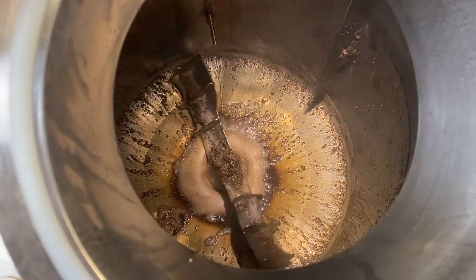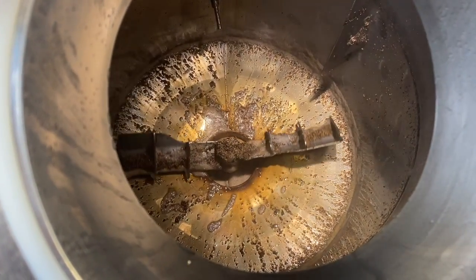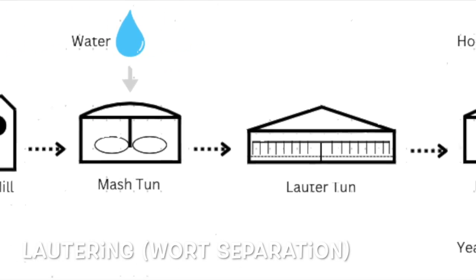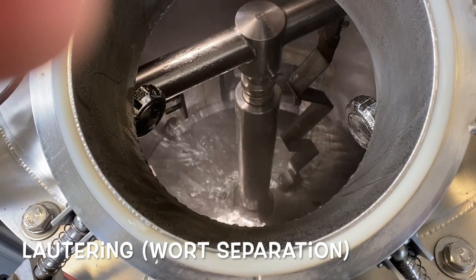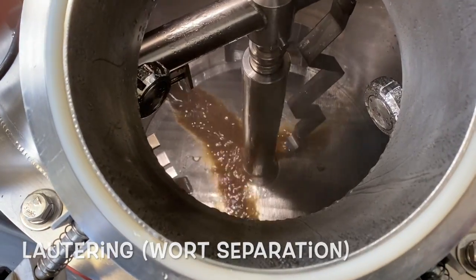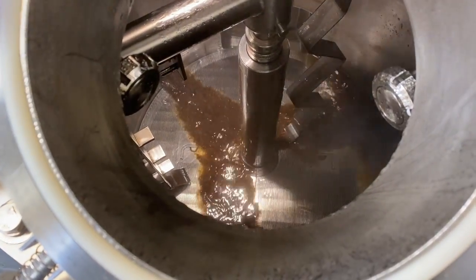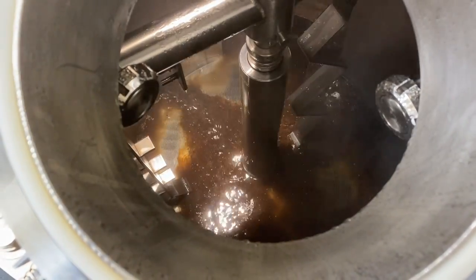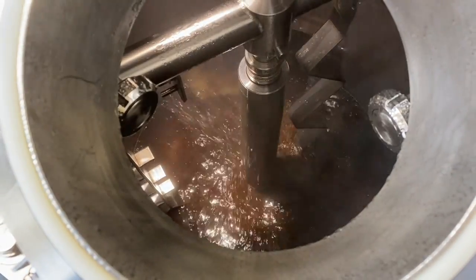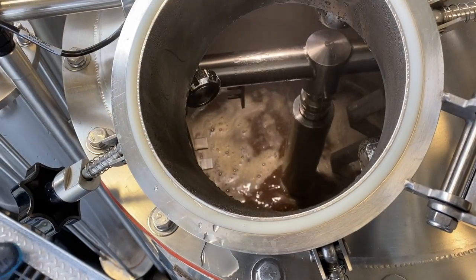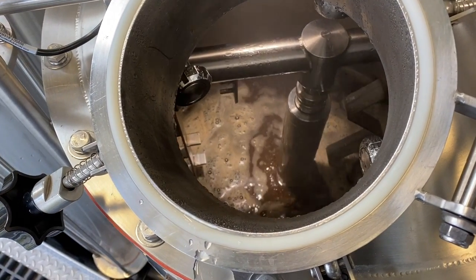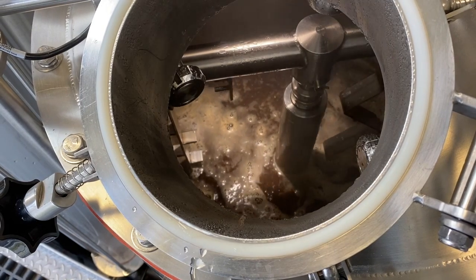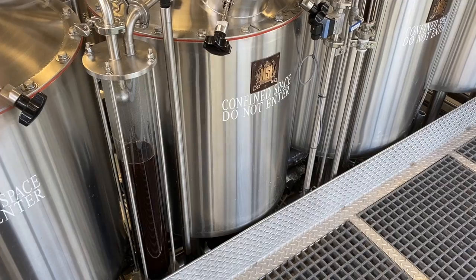Once mashing is complete, the entire mash is pumped over to the lauter tun. The next stage of the brewing process is called wort separation. Once all the husk material and grain particles along with sweet wort are transferred into the lauter tun, the mash is allowed to rest for a while. The lauter tun is a vessel that has a false bottom. All the grain material and the husk is going to settle at the bottom of the vessel, forming a filter bed.